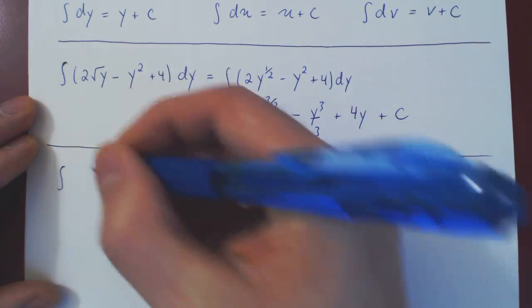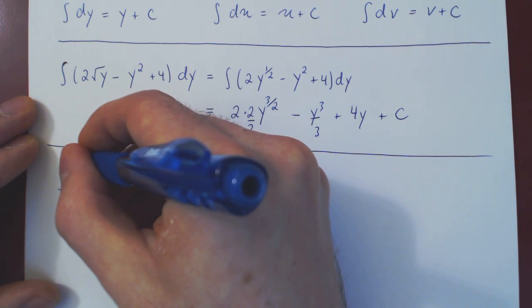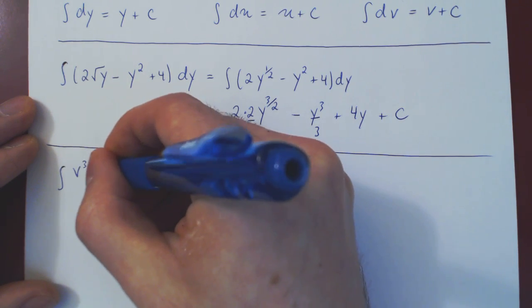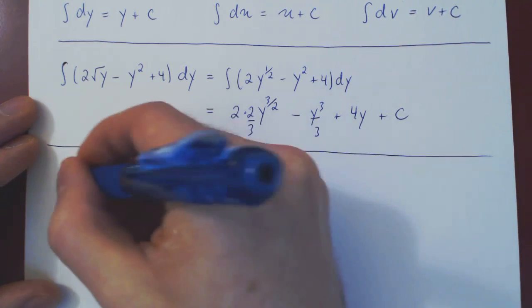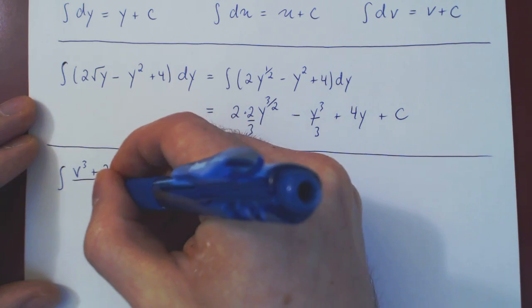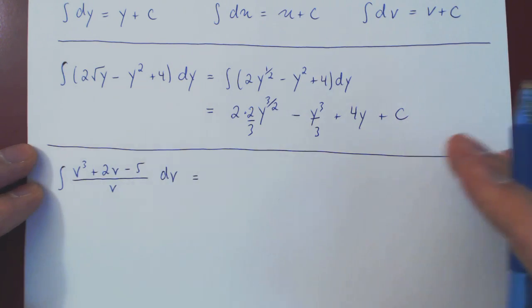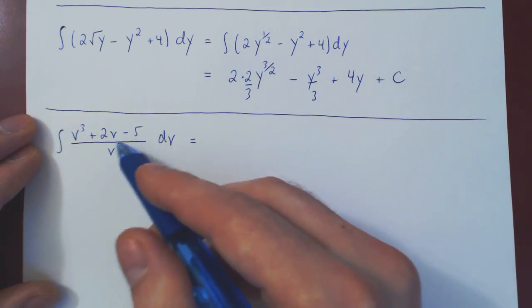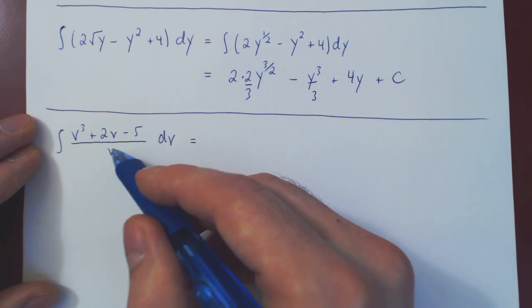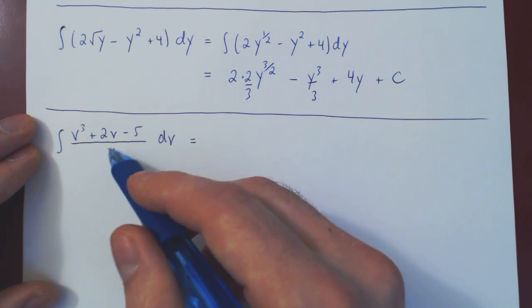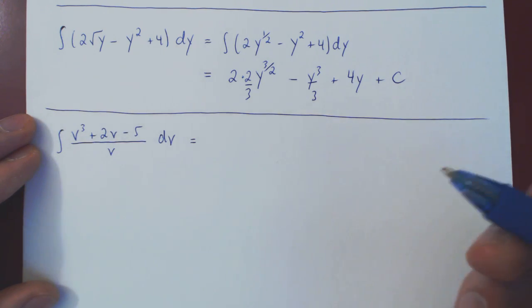If I were to integrate, say, v cubed plus 2v minus 5 over v with respect to v dv, well, now we have a quotient. We know we cannot integrate over a quotient directly, but as we are dividing by a single variable v, we can divide through and then use the power rule.